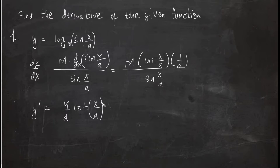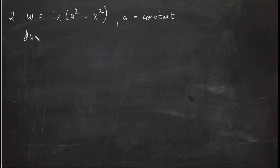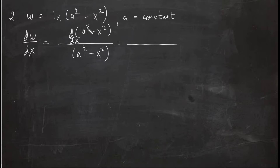Problem number two: w equals the natural logarithm of a² minus x², where a is a constant. The derivative of w with respect to x is simply the derivative of (a² − x²) with respect to x, over (a² − x²). Since a² is constant, the derivative of −x² is −2x. So the answer is −2x over (a² − x²).